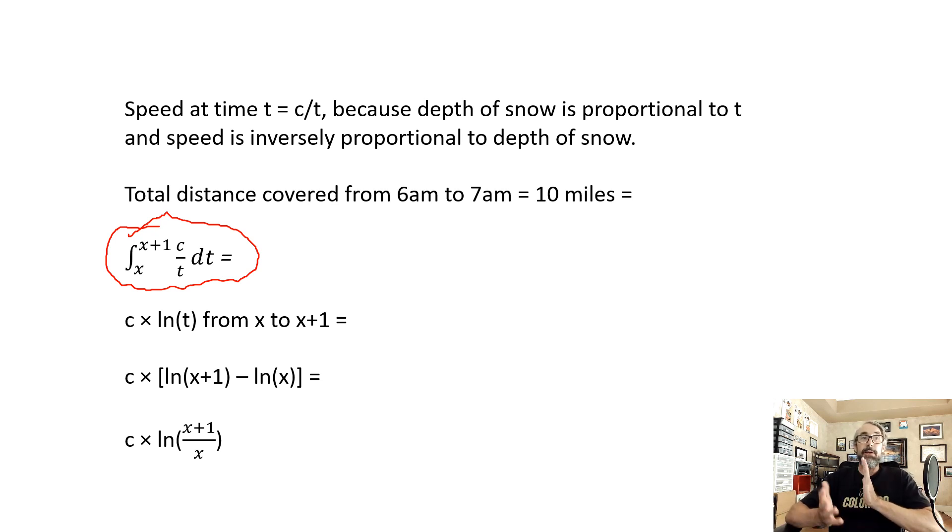And from here, it's just a matter of doing the calculus, which is pretty basic. I'm sure you know that the integral of one over t is the natural log of t. And I'm sure you know that the natural log of a minus the natural log of b is the natural log of a over b. So just taking, just doing simple calculus gets us to c times the natural log of x plus one over x.